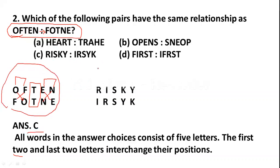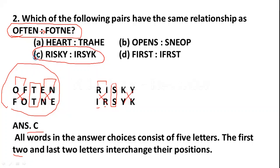Option C is RISKY and IRSKY: R and I are interchanged (in place of R, I is written; in place of I, R is written); S is kept as it is; K and Y are interchanged (in place of K, Y is written; in place of Y, K is written). So Option C is the correct answer. I think you got this. Now we will move to the next question.